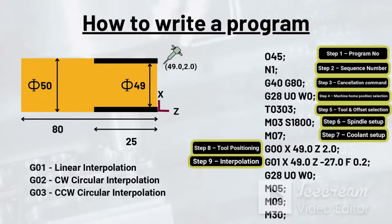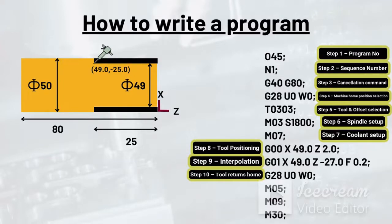Since linear interpolation is seen in this case, we will use G01 and the complete command would be G01 X49.0 Z-27.0 F0.2. In the next step we will retract the tool. This step is also known as tool return home.